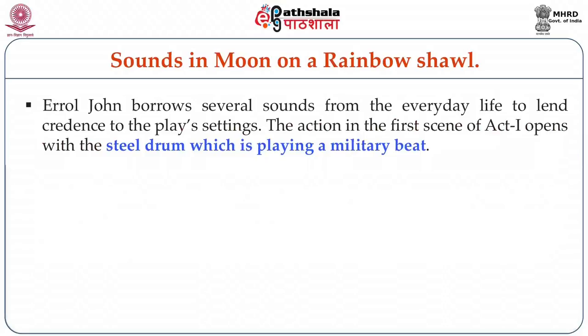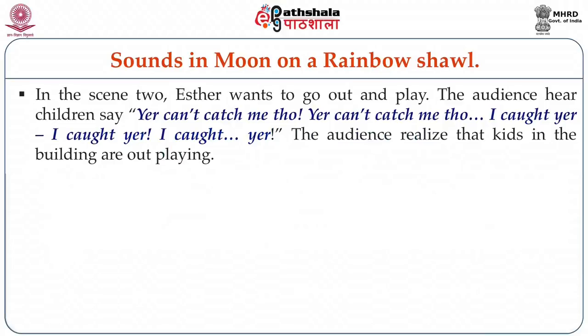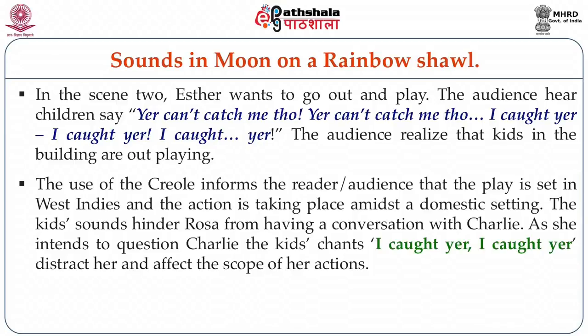Now let's look at the sounds in Moon on a Rainbow Shawl. Errol John borrows several sounds from everyday life to lend credence to the play's settings. The action in Act 1 Scene 1 opens with a steel drum playing a military beat, indicating a military presence on the island. The calypso singer's voice is also heard, indicating the action is taking place in the West Indies. The baby's cry comes up frequently throughout the play and lends domesticity to the scenes. In Scene 2, as Esther wants to go out and play, the audience hears children chanting, 'You can't catch me though, you can't catch me though, I can't catch her, I can't catch her, I caught her.' The use of creole informs the audience that the play is set in the West Indies amidst a domestic setting. The kids' sounds hinder Rosa from having a conversation with Charlie; as she intends to question him, the children's chants distract her and affect the scope of her actions.